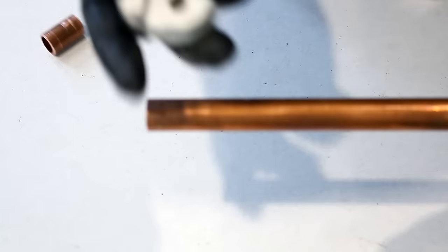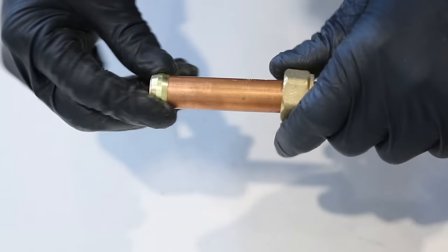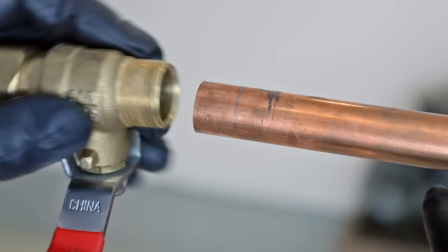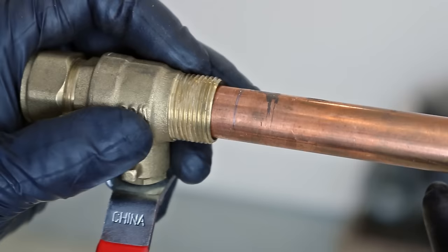Once your pipe is ready, slip on your retainer nut, then the sleeve, and finally, the fitting. The trick to not getting any leaks with these fittings is to ensure the proper penetration. And I'll get back with another trick to ensure this in just a second.